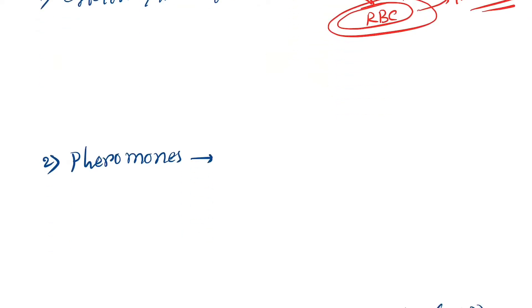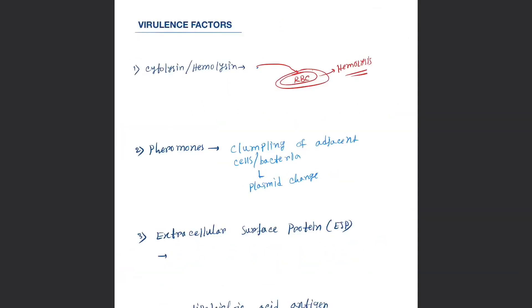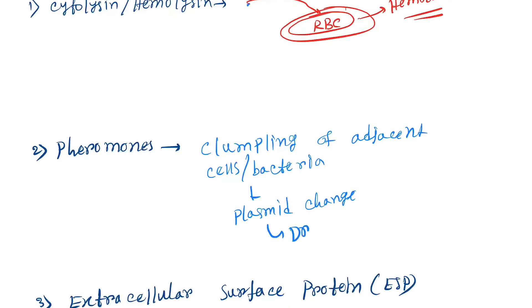Next is pheromones. They cause clumping of adjacent bacterial cells to facilitate plasmid change, which is a mechanism of drug resistance.